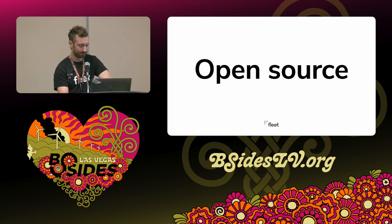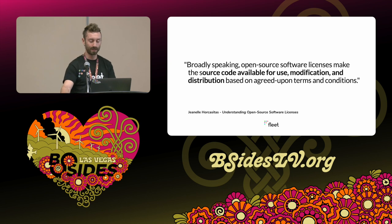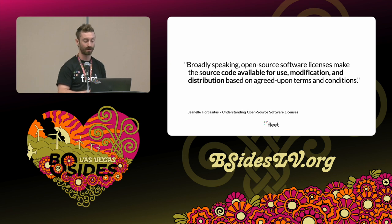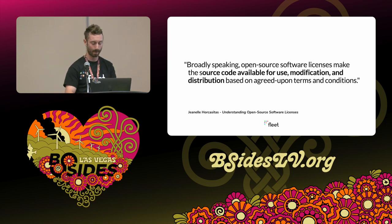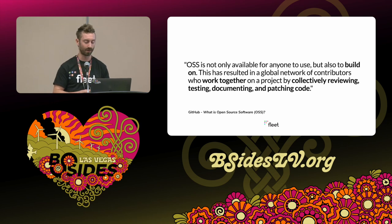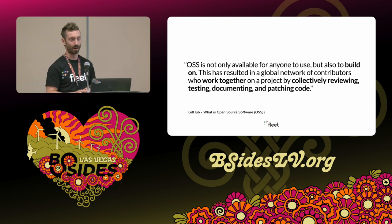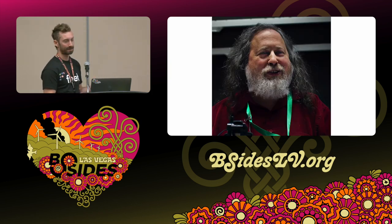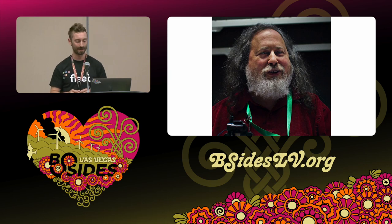And then open source. Broadly speaking, open source software licenses make the source code available for use, modification, and distribution based on agreed upon terms and conditions. OSS is not only available for anyone to use, but also to build on. This has resulted in a global network of contributors who work together on a project by collectively reviewing, testing, documenting, and patching code. And this is Richard Stallman — some of you may recognize him, a real zealot for open source software. We'll come back to him briefly in a bit.